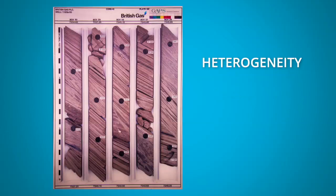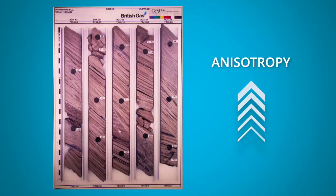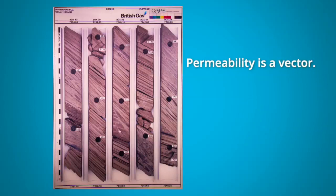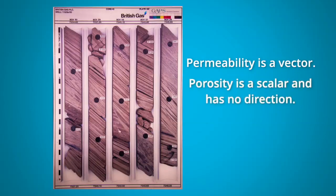Heterogeneity is permeability different at various locations. Anisotropy is permeability different in different directions. Permeability is a vector, porosity is a scalar and has no direction.